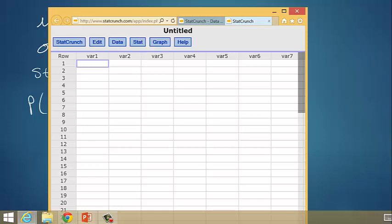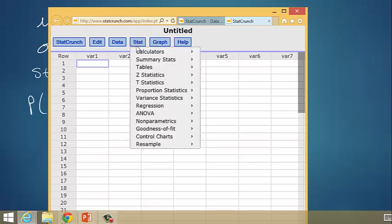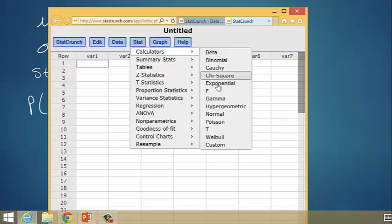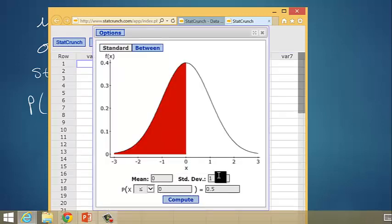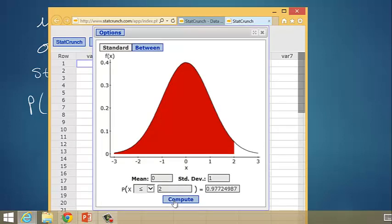We can do that very easily in StatCrunch by going to Stat, Calculators, Normal. So I've got a mean of 0, standard deviation of 1, just like we have in our problem. And then I'm going to find the probability that x is less than or equal to 2. And that gives us this area 0.9772.